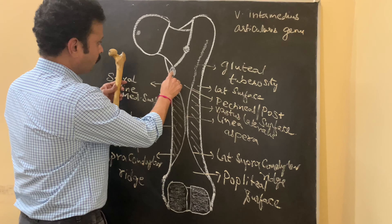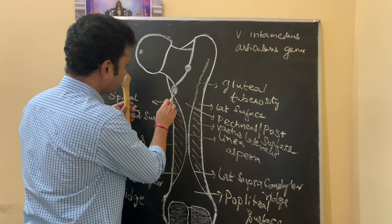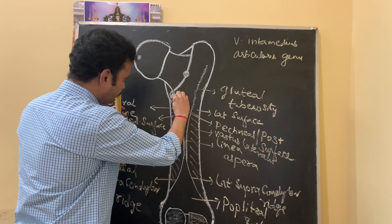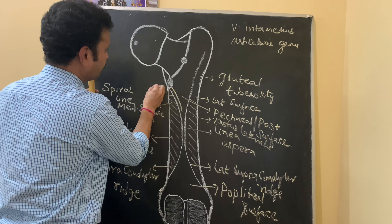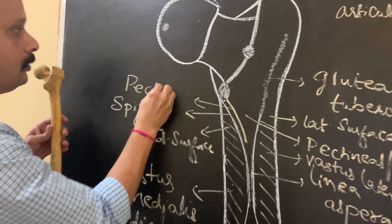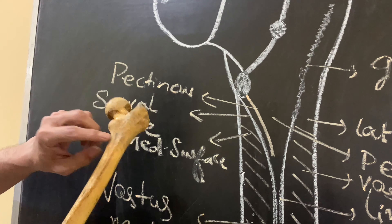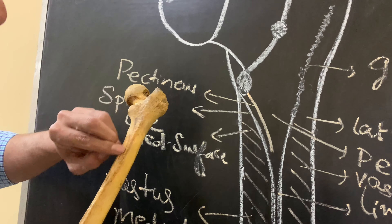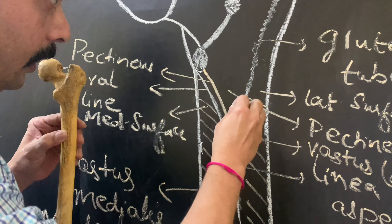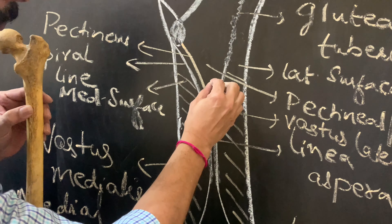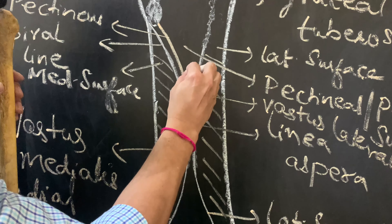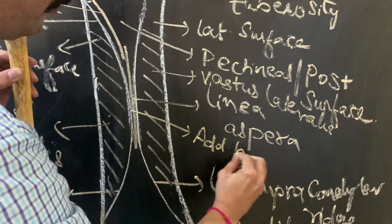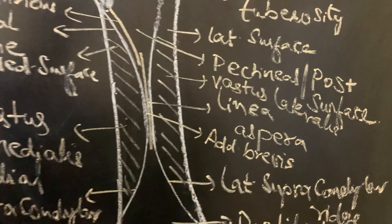Just below the lesser trochanter, by the side of the spiral line, just lateral to the spiral line, is the attachment of pectineus. Then the adductor brevis muscle is inserted just lateral to the pectineus, from its lower part to the middle of the linea aspera.